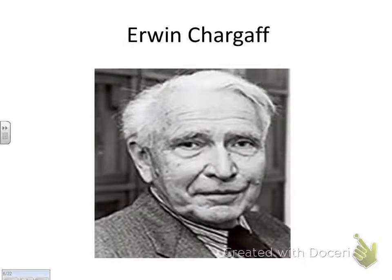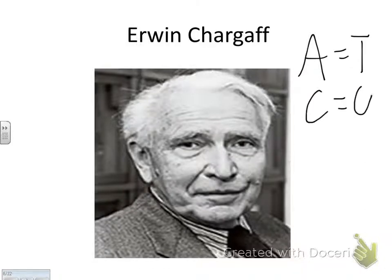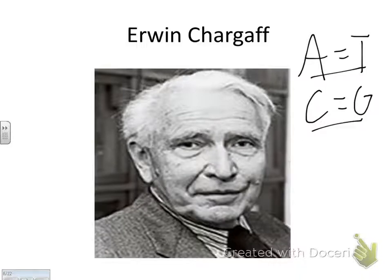Next is Chargaff. He was the one who said A pairs with T, and C pairs with G. Basically, he figured out that if there's a certain amount of adenine, there's the exact same amount of thymine. That's called Chargaff's rule: A pairs with T, C pairs with G.